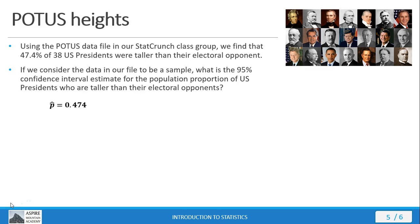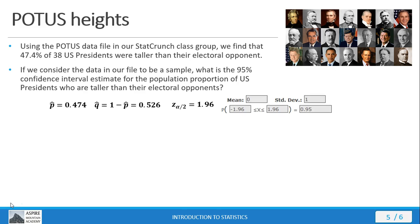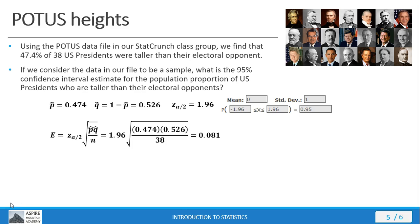Here we actually have a statistic to go off of for our proportion of success, so that's going to be 0.474. We can then subtract that from 1 to get Q-hat of 0.526. Our critical value Z-score of 1.96 comes from our confidence interval estimate of 95%. We put that into StatCrunch, and 1.96 comes out for our critical value Z-score. We now have what we need to calculate our margin of error. We substitute in the values, and that comes out with a margin of error of 0.081.